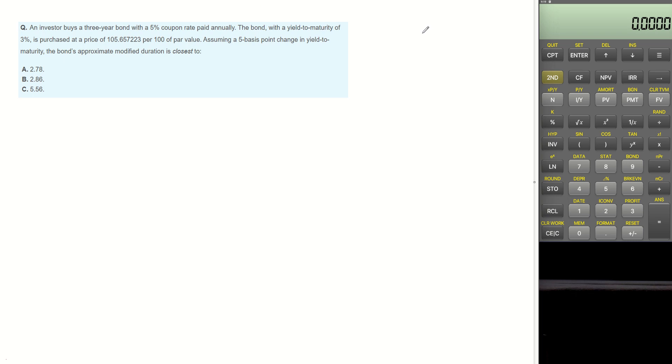An investor buys a 3-year bond with a 5% coupon rate, paid annually. The bond, with yield to maturity of 3%, is purchased at a price of 105.657223 per 100 of par value. The question is, assuming a 5 basis point change in yield to maturity, what will be the bond's approximate modified duration?